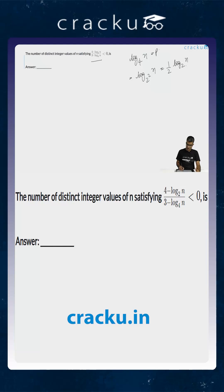So log of n to the base 2 will be equal to 2p. So the inequality that is given to us is 4 minus 2p divided by 3 minus p is less than 0, or 2 minus p divided by 3 minus p is less than 0.